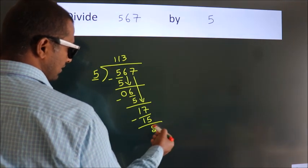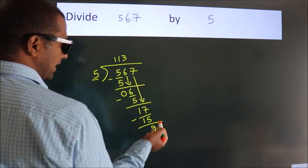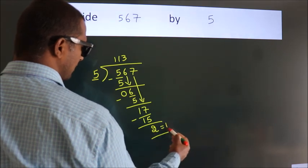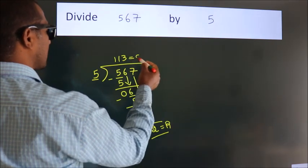After this, no more numbers to bring it down. So we stop here. This is our remainder. This is our quotient.